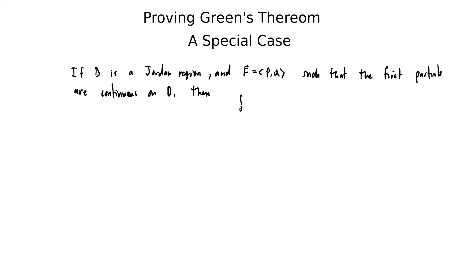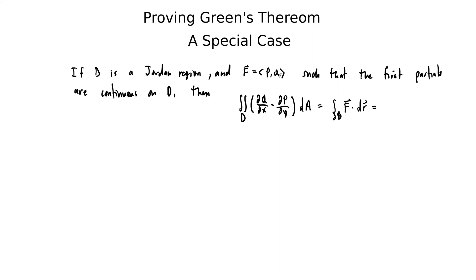Here's the point: what we end up with is that the double integral over the region D of the function built by taking the difference of these partial derivatives — the dQ/dx minus the dP/dy — integrated with respect to area, equals the path integral around the boundary C of F dot dR, where C is the boundary of D, sometimes written as partial D. We can also write this path integral as the integral along the boundary of P dx plus Q dy, by working out the dot product in component form.